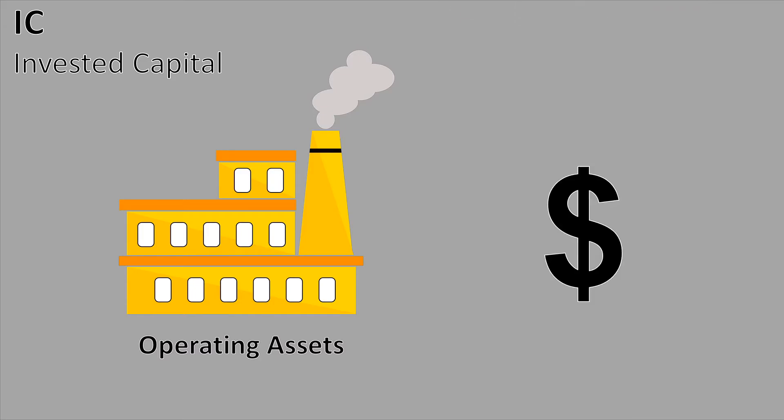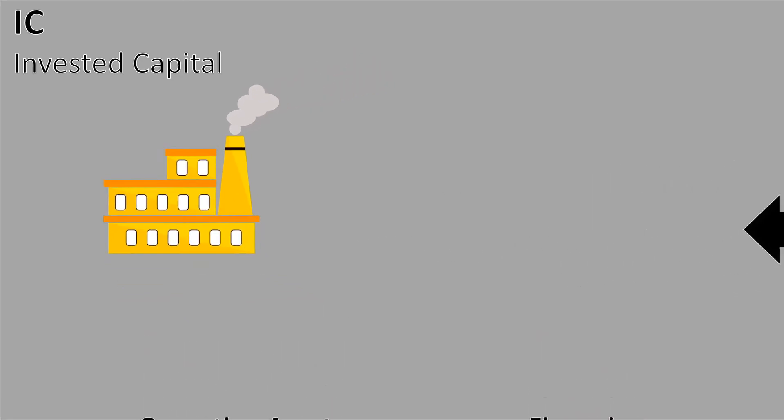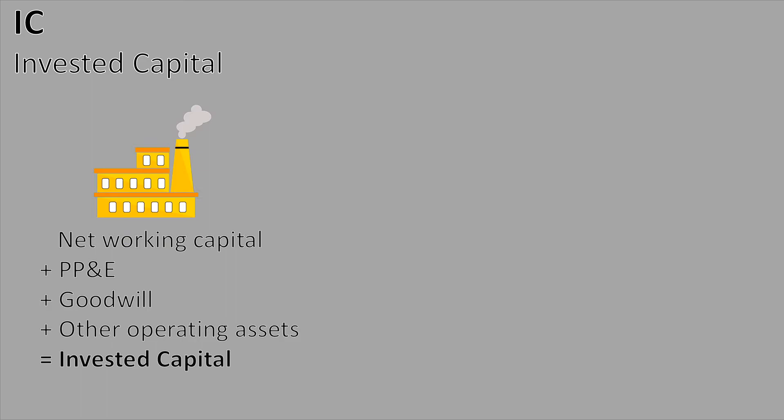You could also define Invested Capital over the passive side of the balance sheet — i.e., all the capital needed to finance our operating assets like our production plant. But first let us have a look at the calculation through the data on the active side. We start with Net Working Capital, which represents the current assets of the firm like inventory, cash, and accounts receivable, minus current liabilities like accounts payable. After that we add plant, property and equipment, followed by Goodwill — an intangible asset consisting of items like brand value or customer relations. Finally, we include other operating assets needed for the business to function properly. Adding all those together, we obtain the Invested Capital required for our calculations.